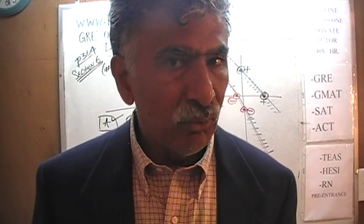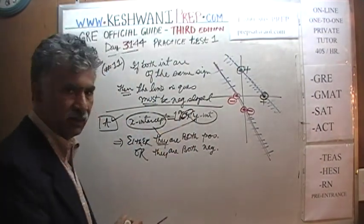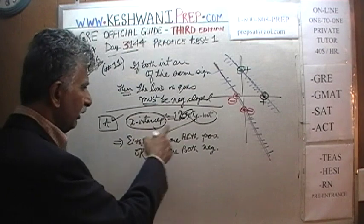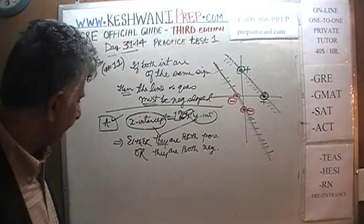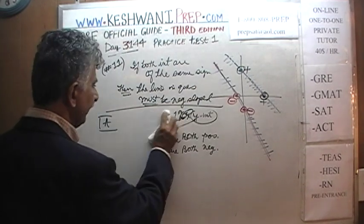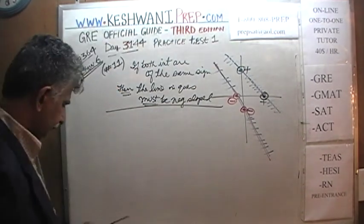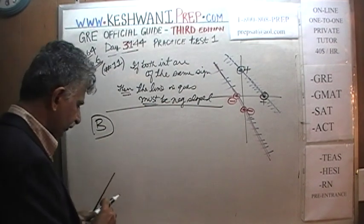It doesn't matter that the X-intercept is exactly two times the Y-intercept. Don't waste your time on that. They could have put 2, 12, or 12,000 here — it makes no difference. Both intercepts have to be the same sign. Let's do Statement B.